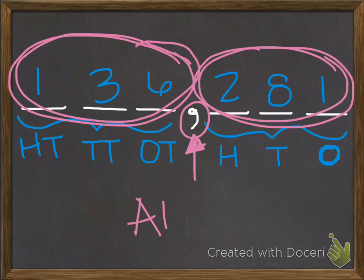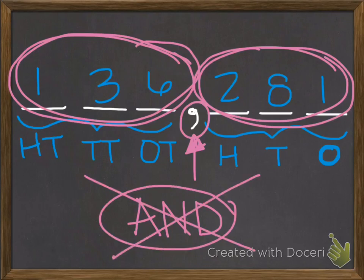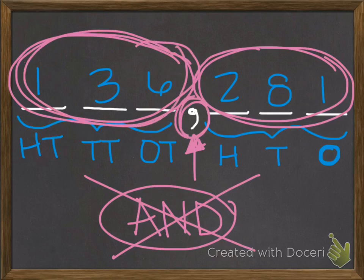Notice, I did not say the word and when I pronounced my number. Remember, we don't say the word and. We'll learn more about that in fourth grade. So, again, this is one hundred thirty-six thousand two hundred eighty-one.